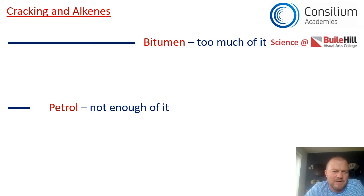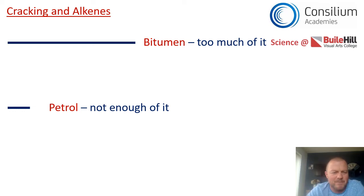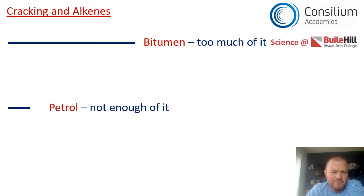To summarise: bitumen is a long-chain hydrocarbon alkane and there's too much of it. Petrol is a shorter-chain alkane and there's not enough of it. So the question is: how do we make more petrol from the excess bitumen we have left over?